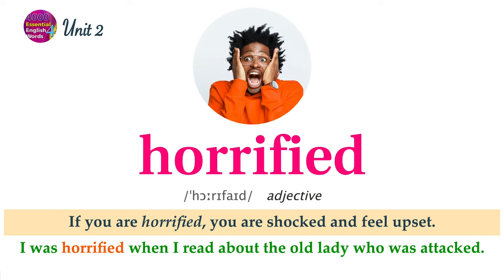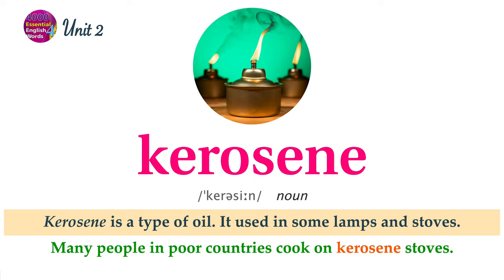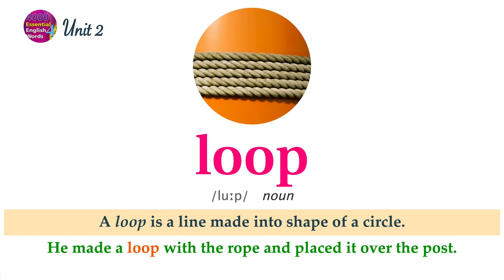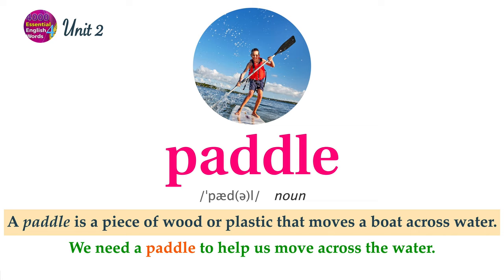If you are horrified, you are very shocked and feel upset. I was horrified when I read about the old lady who was attacked. Kerosene is a type of oil. It is used in some lamps and stoves. Many people in poor countries cook on kerosene stoves. A loop is a line made into the shape of a circle. He made a loop with the rope and placed it over the post. A paddle is a piece of wood or plastic that moves a boat across water. We need a paddle to help us move across the water.